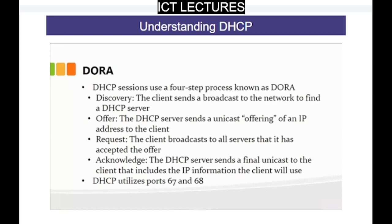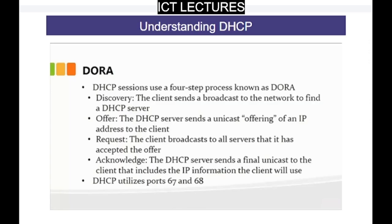The third step is the Request — the client then broadcasts to all servers that it has accepted the offer, so everyone on the network knows a certain IP address has been assigned to this computer so that it cannot be duplicated. IP addresses cannot be duplicated or assigned to any other computer on the network. The fourth step is the Acknowledge — the DHCP server sends a final unicast to the client computer that includes the IP information the client will use.